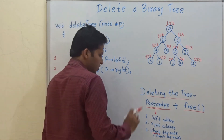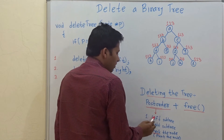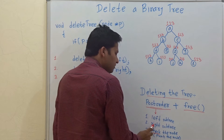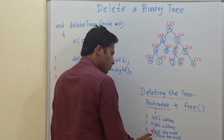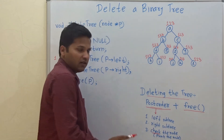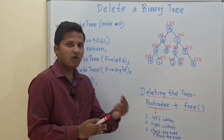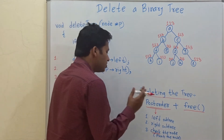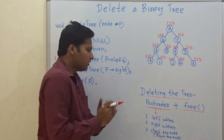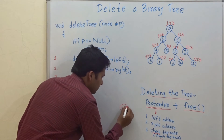So let's revise it quickly. The post-order traversal is visiting the left subtree of a node first, then the right subtree of a node, and then the node itself. Checking the node means performing some action on the node — that action can be either printing that node or deleting that node.